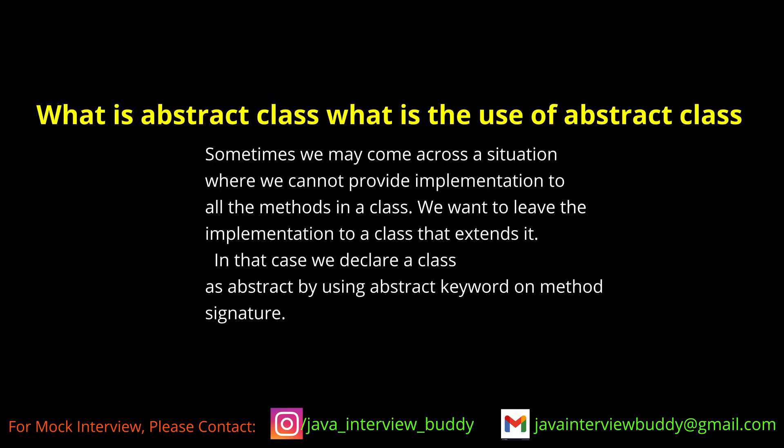An abstract class is used when you have partial implementation. It can have both abstract methods and non-abstract methods. If any class extends an abstract class, that class must either be declared abstract itself or override and implement all the abstract methods of the abstract class.